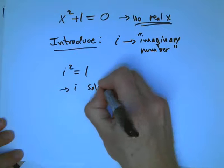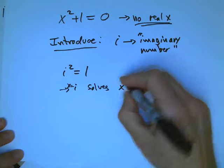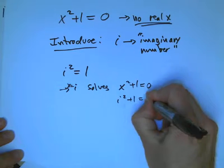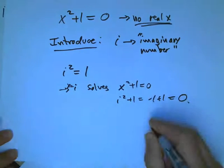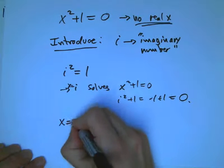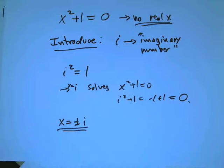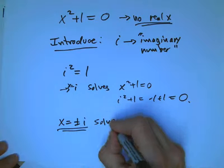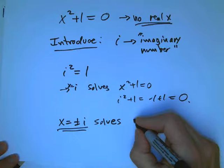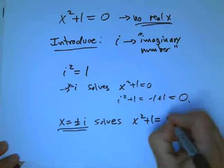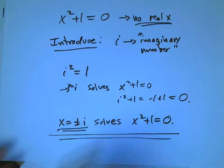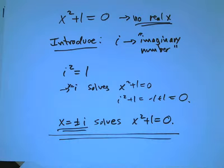And the definition of i is that i squared is -1. And therefore, i does solve this, x equals i does solve x squared plus 1 equals 0 because i squared plus 1 is minus 1 plus 1 equals 0. And that's not the only solution. In fact, x equals plus or minus i. As soon as we introduce i, it should make sense to take minus of that. Both of those are the solutions to x squared plus 1 equals 0.